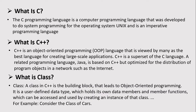The first question is: what is C? C programming language is a computer programming language that works to do system programming for the operating system Unix, and is an imperative programming language.